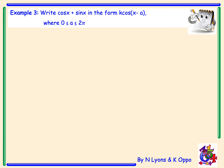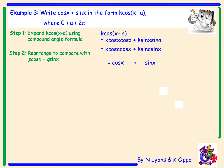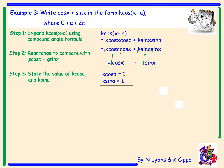Example 3: Write cos x plus sin x in the form k cos of x minus a, where a lies between 0 and 2 pi. This time we are working with radians. Using the compound angle formula, we expand k cos of x minus a and rearrange to compare coefficients, giving k cos a cos x plus k sin a sin x. Writing cos x plus sin x underneath, k cos a equals 1 and k sin a equals 1.